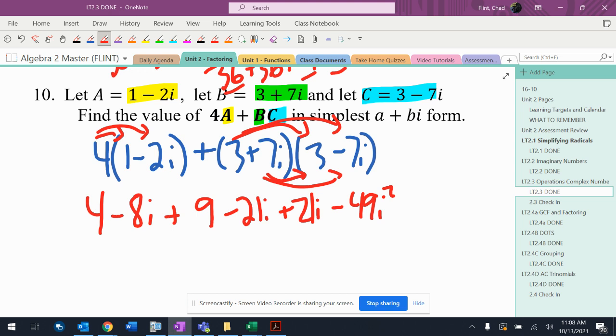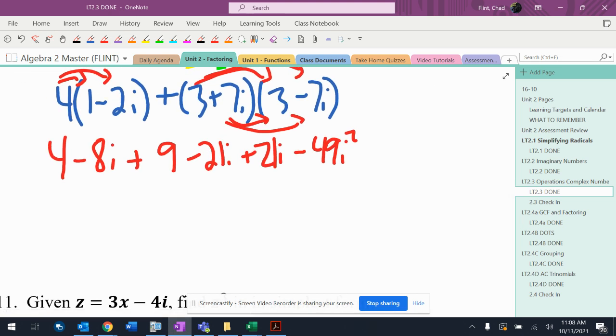I'll go through here and combine some like terms in this step. So I got 4 and 9 is 13. The -21i and +21i just cancel each other out. So I have -8i.